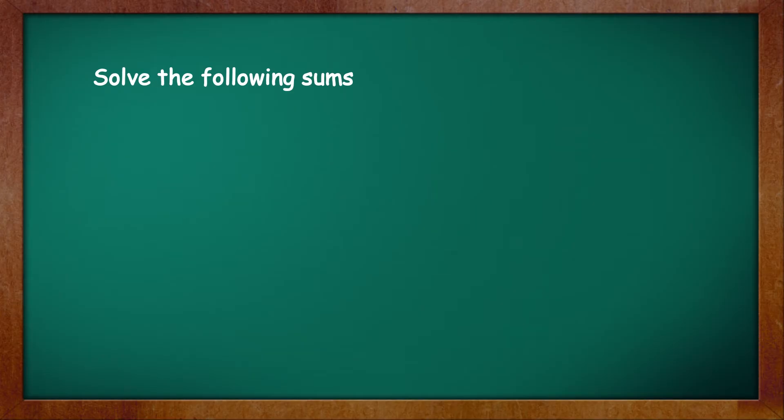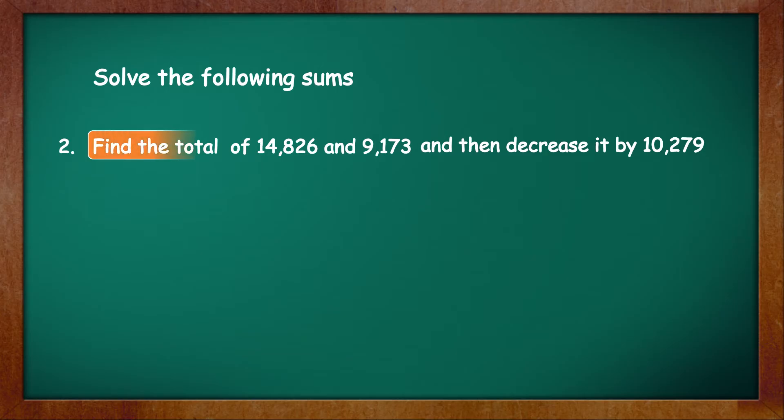Next, sum number 2: find the total of 14,826 and 9,173, and then decrease it by 10,279. In this question, you have to first find the total of 14,826 and 9,173, for which you will add, and then decrease the sum by 10,279, for which you will subtract.